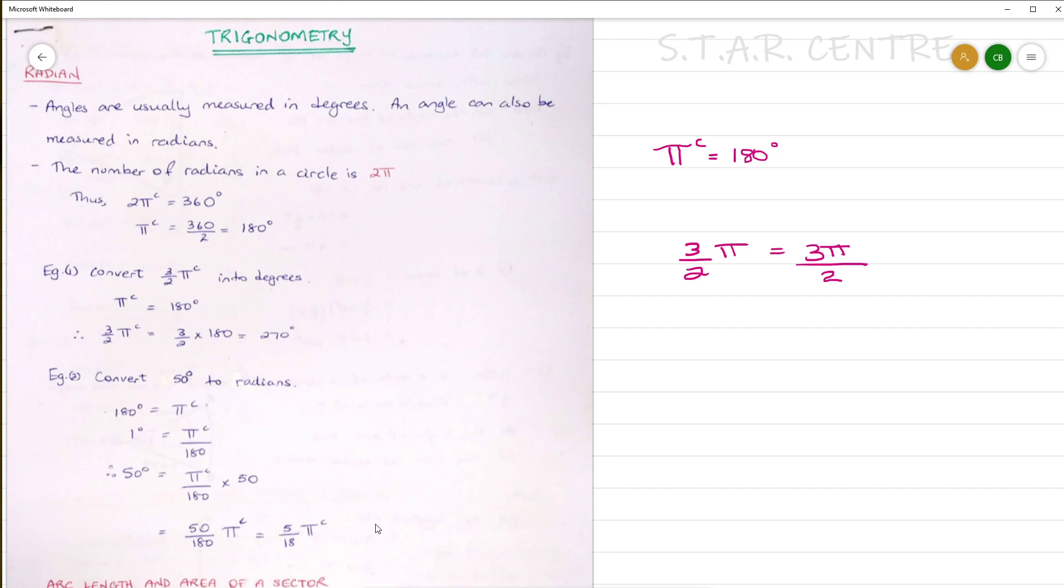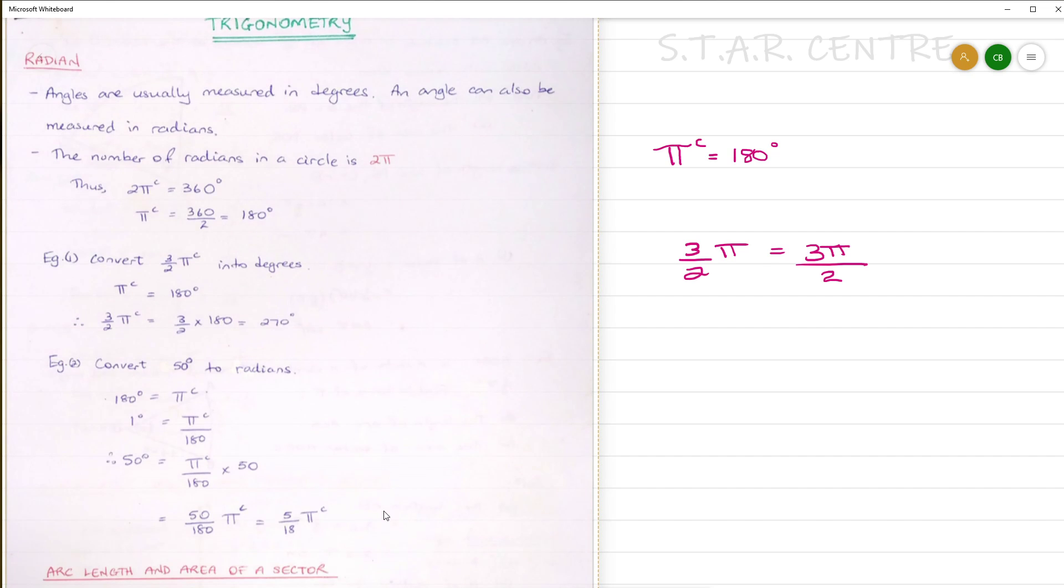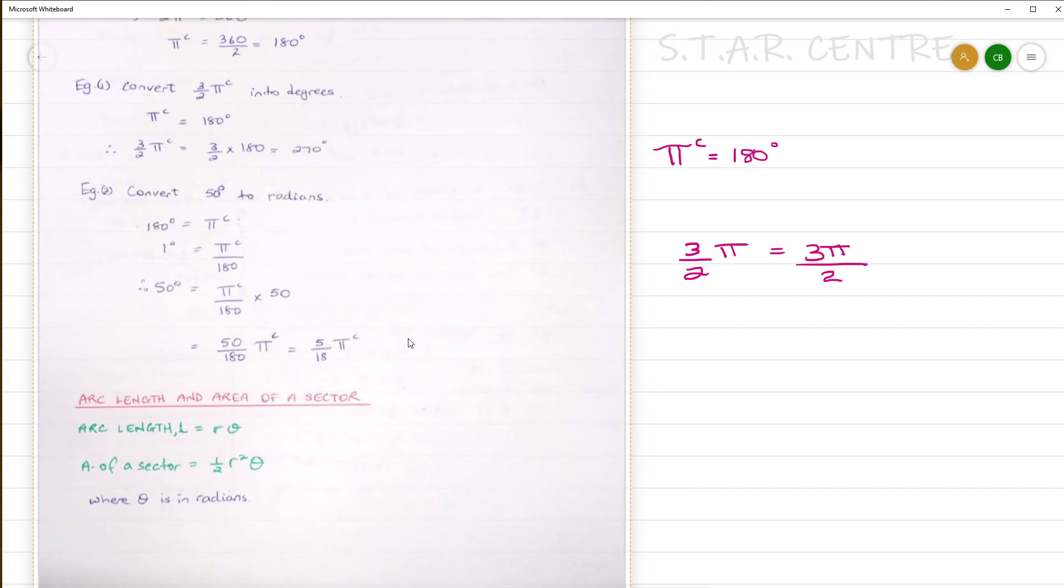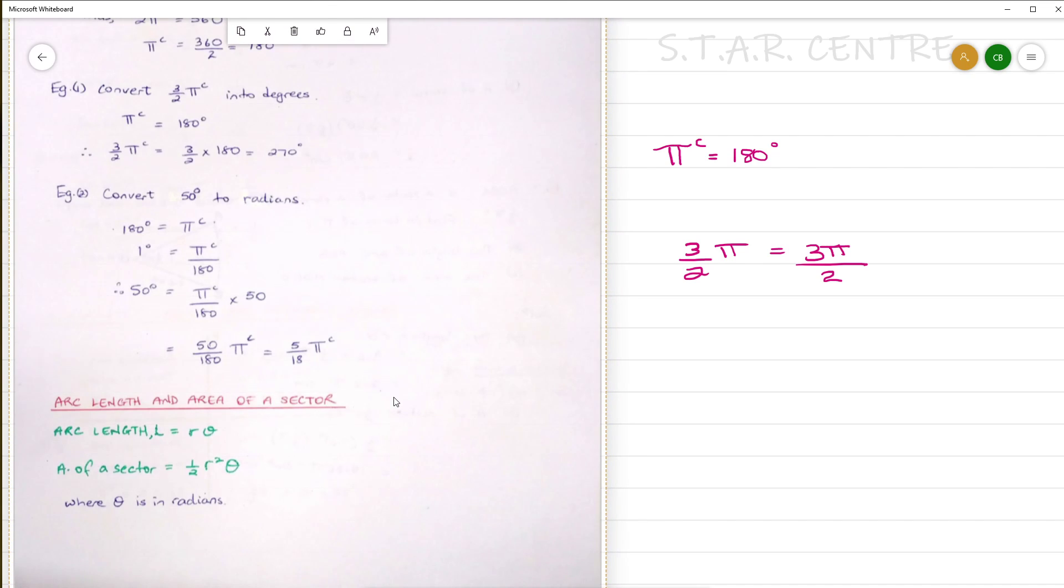Next, we are going to move on to area of a sector and arc length. We have two formulas here that would be new. The length of an arc equals r θ and area of a sector equals 1/2 r² θ. Just to recall from mathematics, a sector is a part of a circle comprising of two radii and an arc, similar to a slice of pizza.